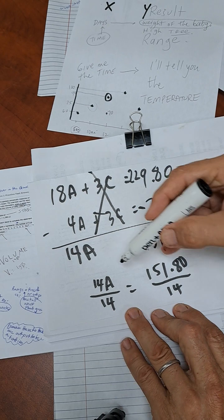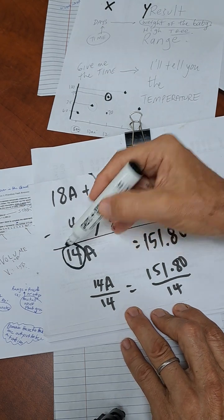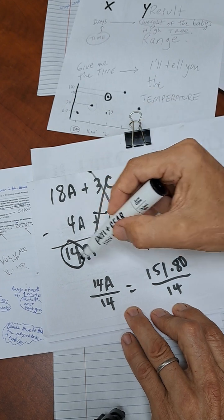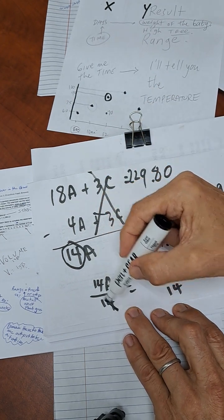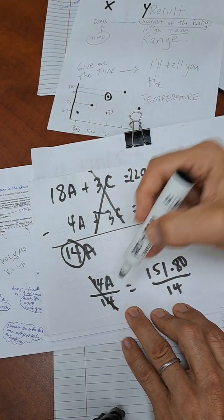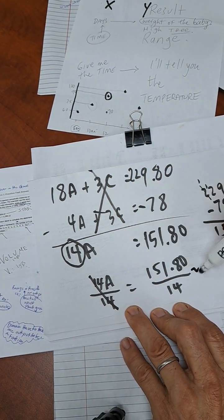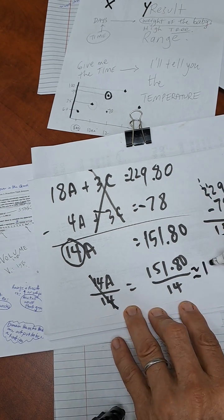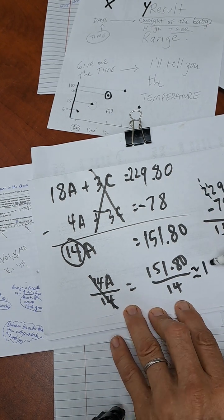As Herbie has pointed out, we have to get the 14, get rid of that. So the opposite of multiplying by 14, so we divide by 14. Do it on both sides. If you do it on one side, got to do it on the other. And this right here is going to equal approximately like, I don't know, $10, $11, something like that.